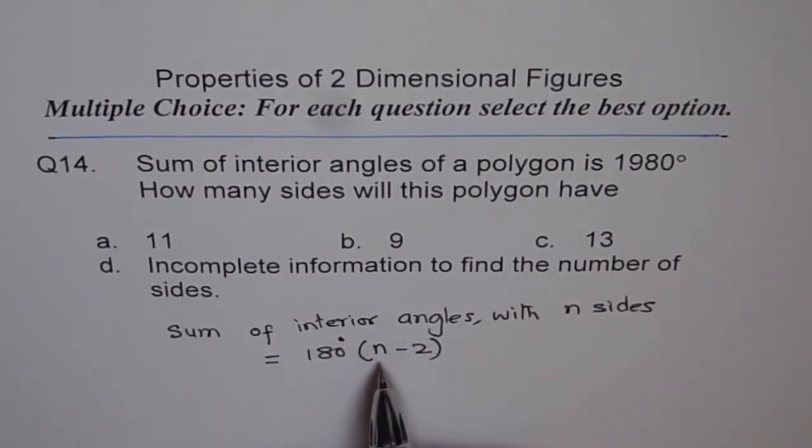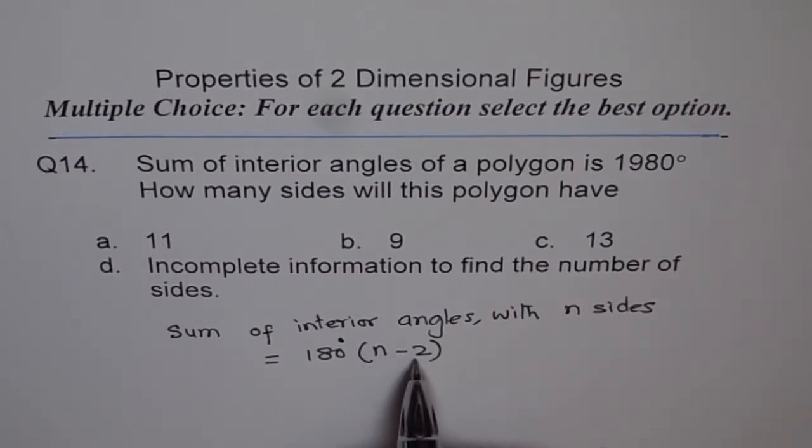If the sides are 3 as in a triangle, then n is 3 and 3 minus 2 is 1, and the sum of interior angles for a triangle is 180 degrees. If you take a quadrilateral, any four-sided figure, 4 minus 2 is 2 and 2 times 180 is 360.